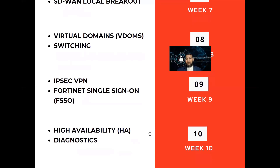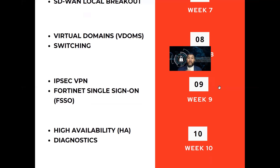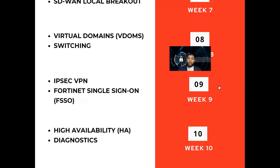In week ten, we'll talk about high availability and diagnostics. Those are the lesson plans. At the end of these 10 weeks, you will be able to configure a next generation firewall with basic setup, configure policies, set up VPN for your office, apply antivirus policies, control which applications are accessed, and set up micro-segmentation. As a network security administrator, you will be able to provision the entire company's network security.